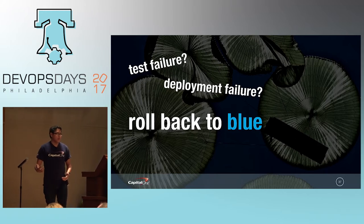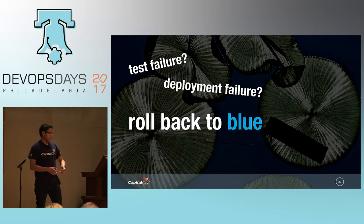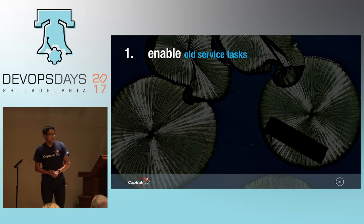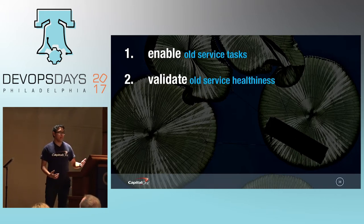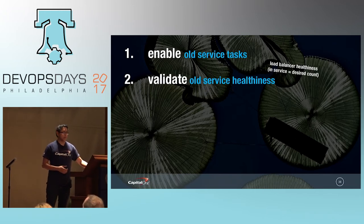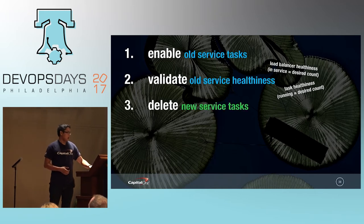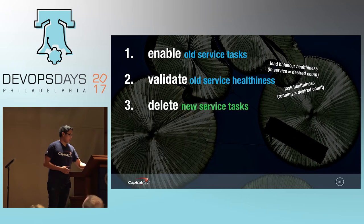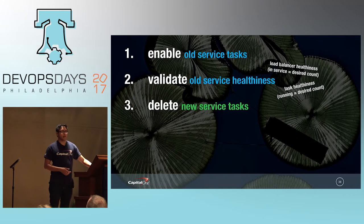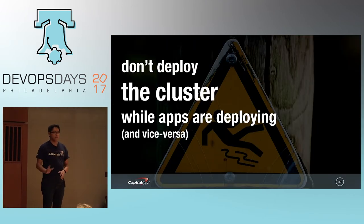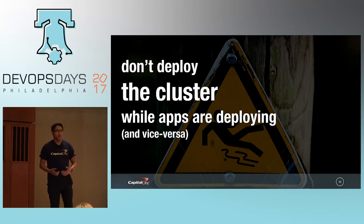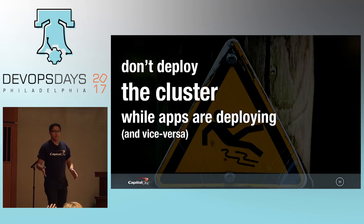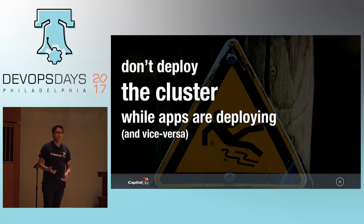In the event of a test failure or deployment failure in the service pipelines, we roll back to blue by re-enabling the old service tasks — just setting the desired count back to what it originally was — then validating the healthiness of those tasks and the load balancer, and deleting the new service tasks. One huge caveat: you don't want to deploy the cluster while apps are deploying or vice versa, because the validations on task counts and service healthiness will blow up if you try to do both simultaneously. We're currently working on a locking system so that one cannot happen while the other is happening.